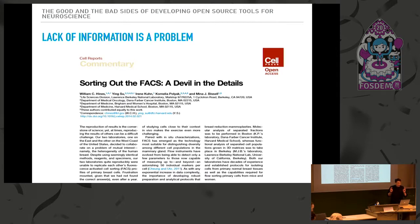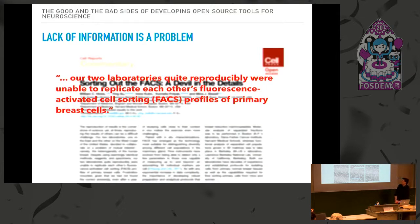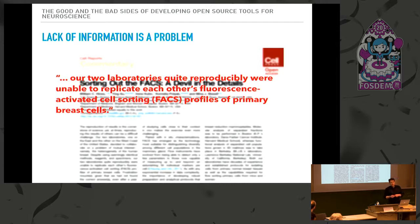There's one paper, 'Sorting out the facts: the devil in the details.' This is a paper or short comment by two laboratories who try to reproduce their respective results. They're working on the same thing, same methods, but they come up with different results. The striking sentence is: 'Our two laboratories quite reproducibly were unable to replicate each other's cell sorting profile.' They took the time to figure out the problem, and it boiled down to a tiny detail in some protocols hidden somewhere — information that was never noted anywhere.